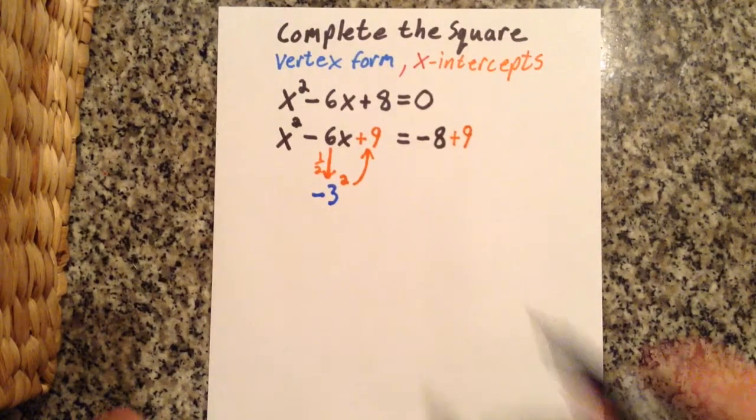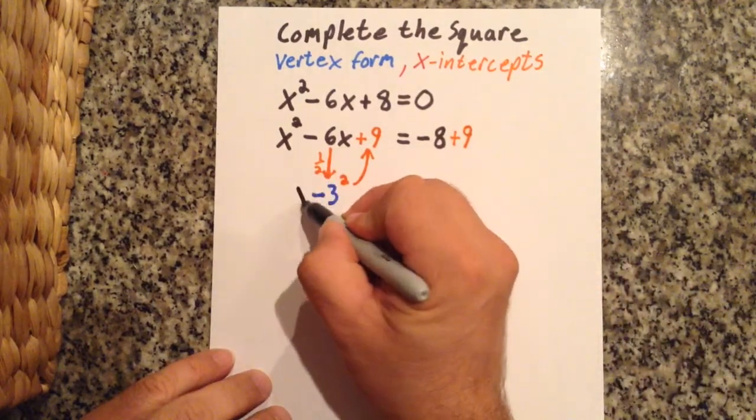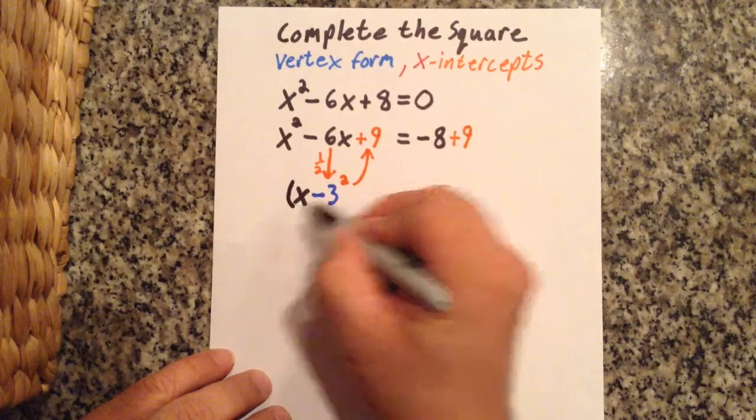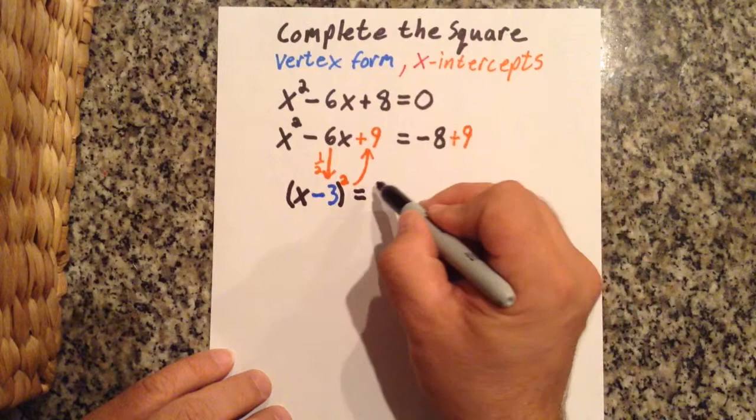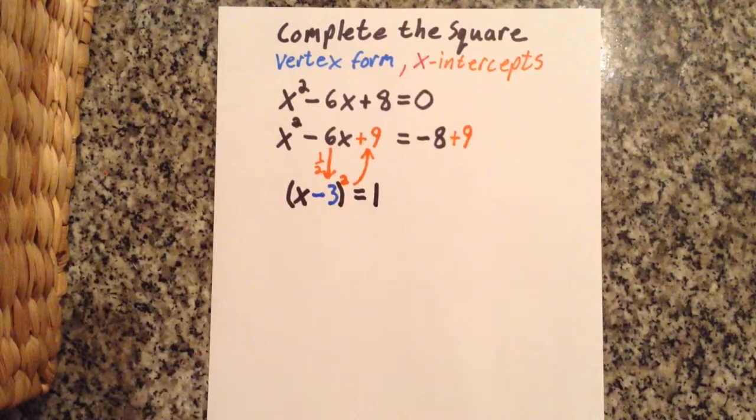Now x squared minus 6x plus 9 is going to give me x minus 3 the quantity squared. So it goes pretty quick. And 9 minus 8 is 1.